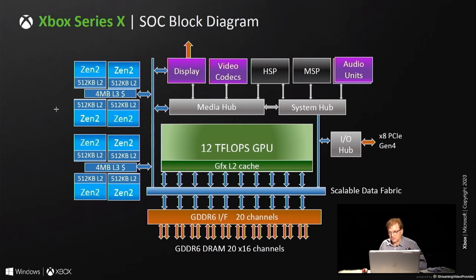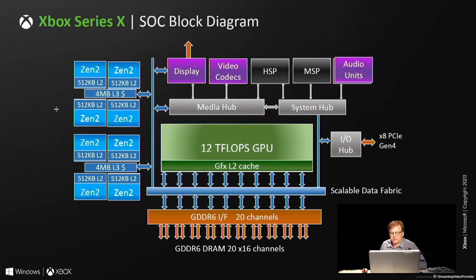At the bottom of the diagram is the GDDR6 channels with 16 GB of GDDR6 on the board. There are 320 DQ pins total running at 14 Gb/pin/s, which results in 560 GB/s total bandwidth. The large number of 320 DRAM banks allows for higher utilizable bandwidth and lower average CPU latency despite the very high graphics bandwidth. At the top of the diagram are hardware accelerators including display, video, and video codecs. We'll get into HSP, MSP, and the audio units in more detail later.